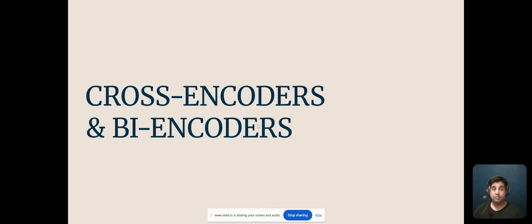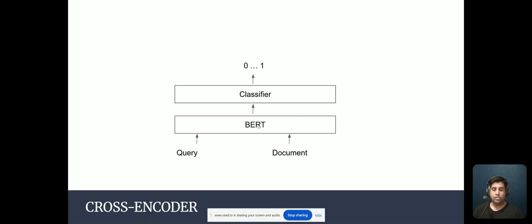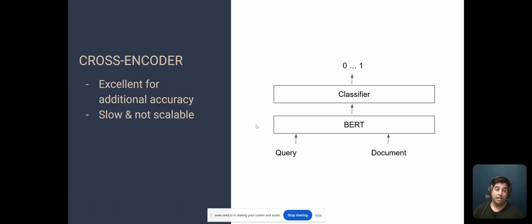Let's look at the building blocks of these systems. A cross-encoder's objective is to semantically compare a query with a document. You send both your query and document to a BERT model — the encoder from the original transformer model — then pass it to a classifier to get a result between 0 and 1 indicating semantic similarity. However, as your document gets larger, the solution becomes less scalable because you have a short query against a large document. So this solution is excellent for additional accuracy, but it's slow and not scalable.